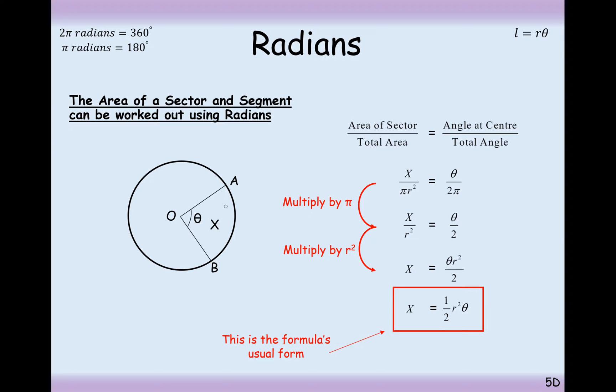That's the formula to help you work out the area of a sector when your angle is measured in radians. If your angle is not measured in radians, then you can always convert it into radians and then use this formula.